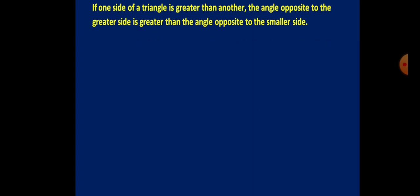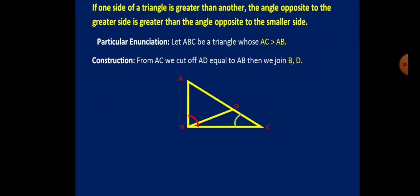Here is our first theorem: if one side of a triangle is greater than another, the angle opposite to the greater side is greater than the angle opposite to the smaller side. Here is the proof. Say, for example, in an arbitrary triangle ABC.